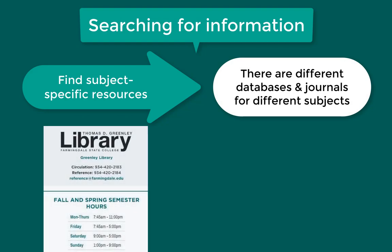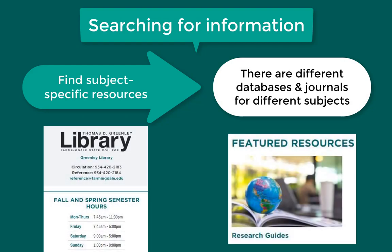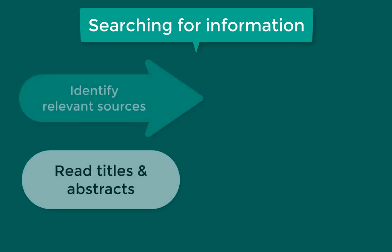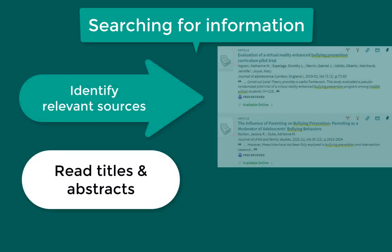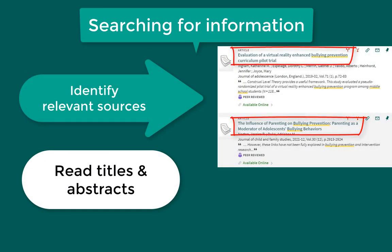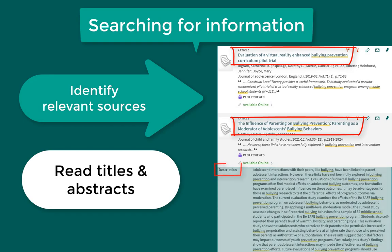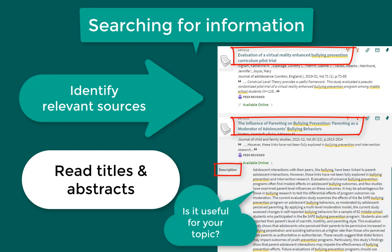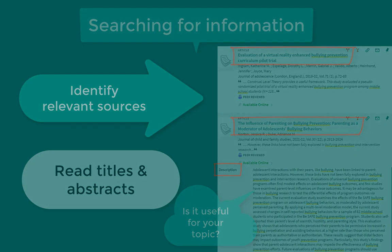Talk to a librarian for assistance with this process and use their research guides on the library website to get started. Throughout the searching process, you will identify relevant titles of sources, then start by reading the abstracts before you read the sources in full. Analyze these summaries to decide if they are actually useful for your topic before you start reading.